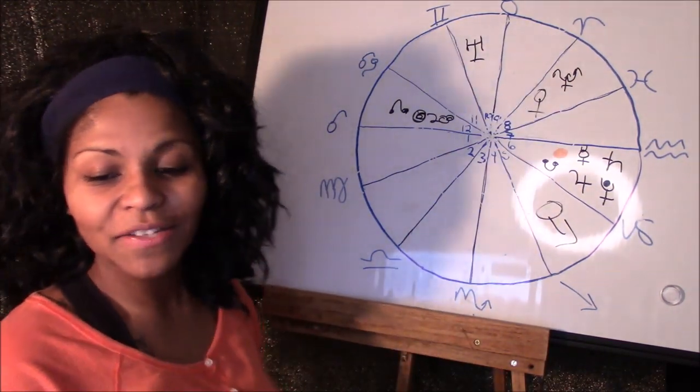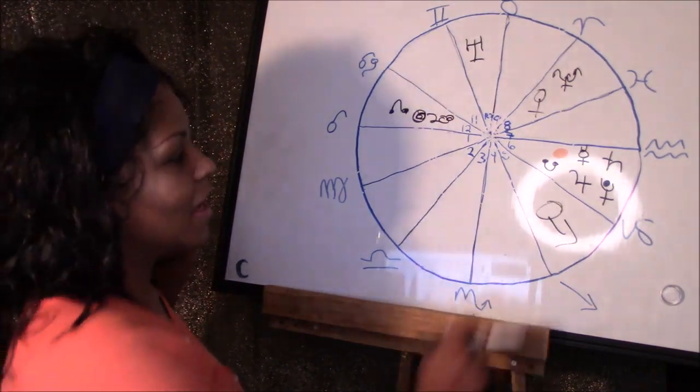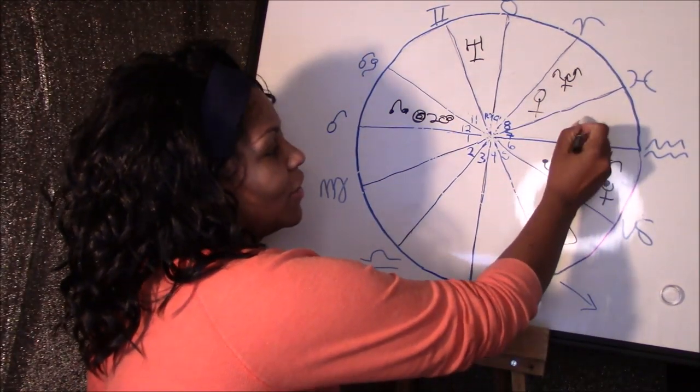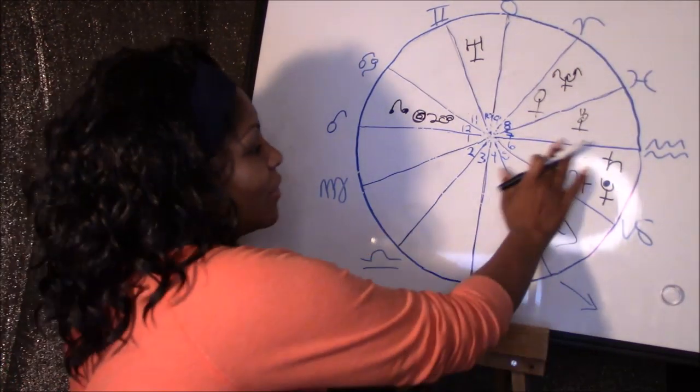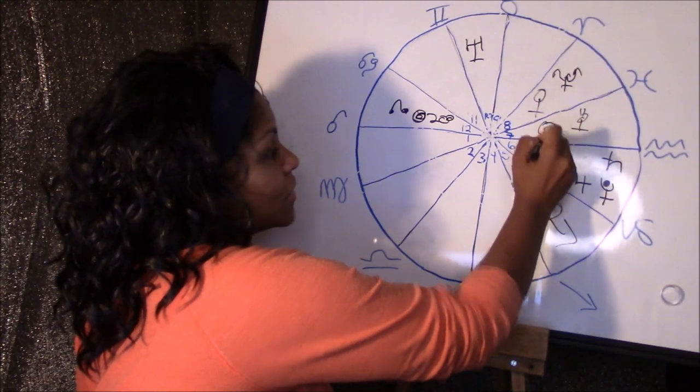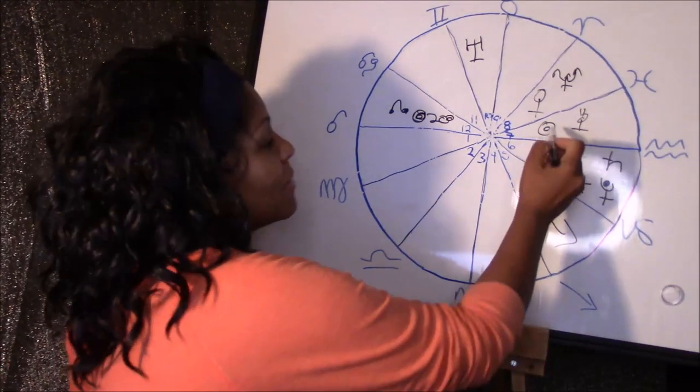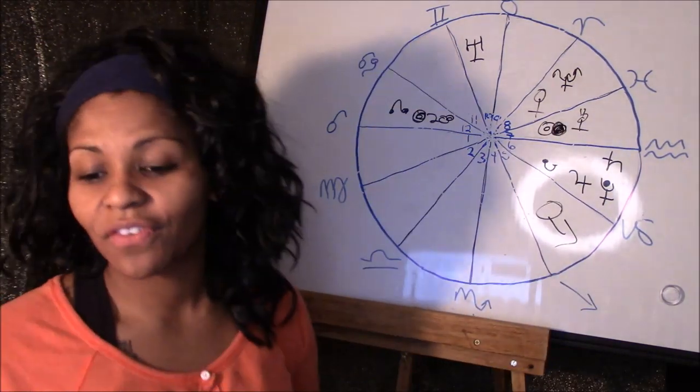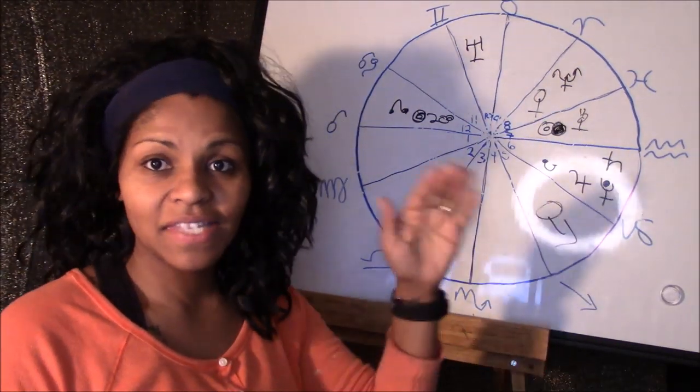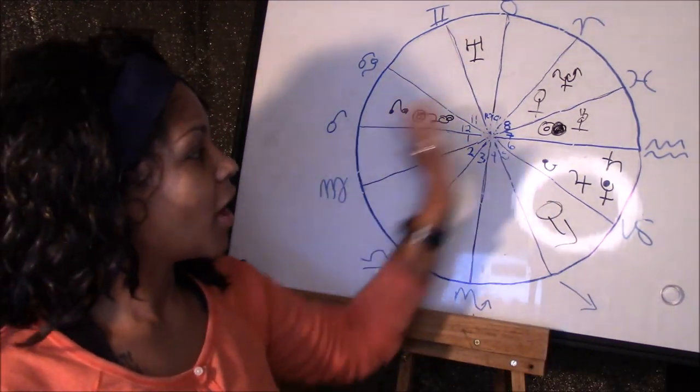On the 16th we see Mercury hightailing it, he's getting out of here into the energy of Aquarius. Right behind that we're going to have the Sun rolling in here into the energy of Aquarius, and right behind that we're going to have a new moon happening on the 24th in the energy of Aquarius.